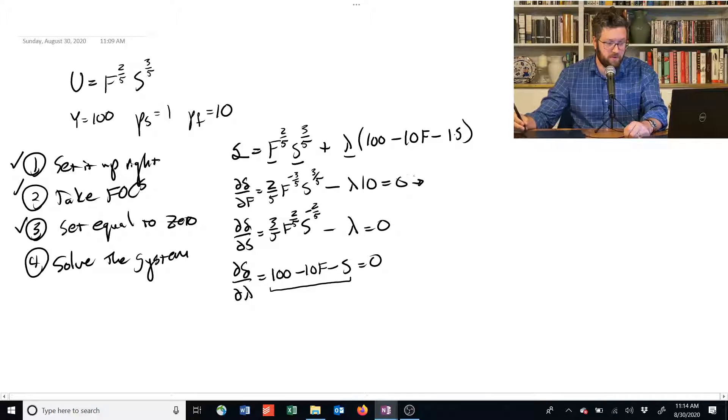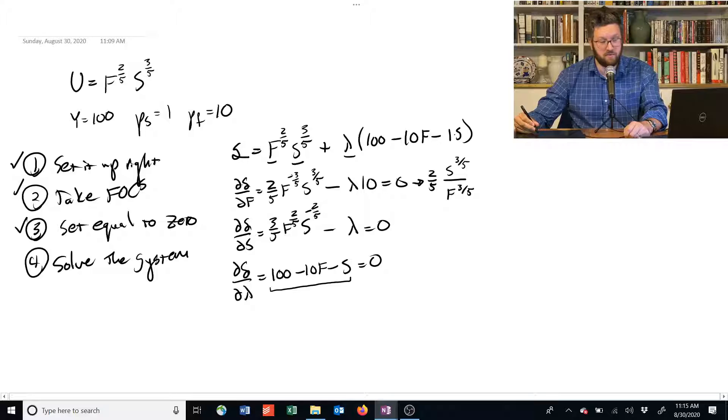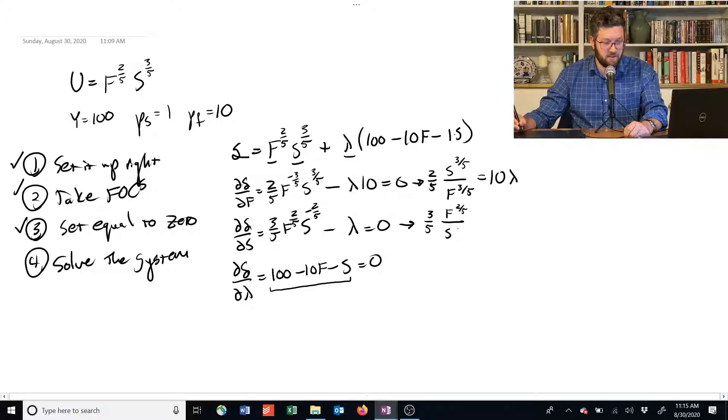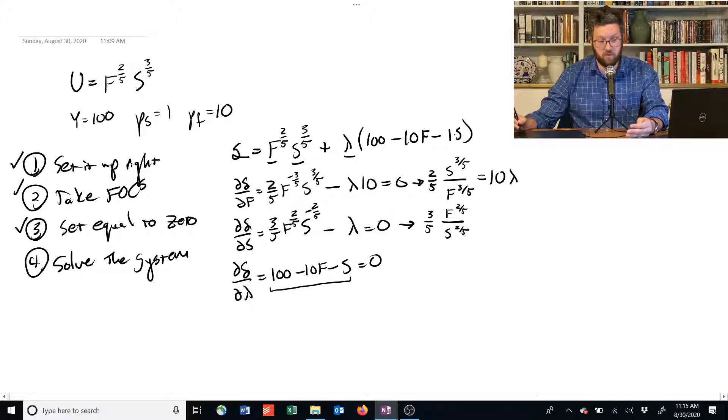So, let's go through that carefully here. This equation can be rewritten as two-fifths times S to the three-fifths divided by F to the three-fifths. Notice that F was to the power of negative three-fifths, so we can also rewrite it as one over F to the positive three-fifths. And let's add lambda times 10 to both sides, so we just get 10 times lambda here. This equation can be rewritten as three-fifths. We have F to the two-fifths power divided by S to the two-fifths power. By the same argument, it's to the negative two-fifths here, so we can write it as one over two-fifths here. And this is equal to just lambda.